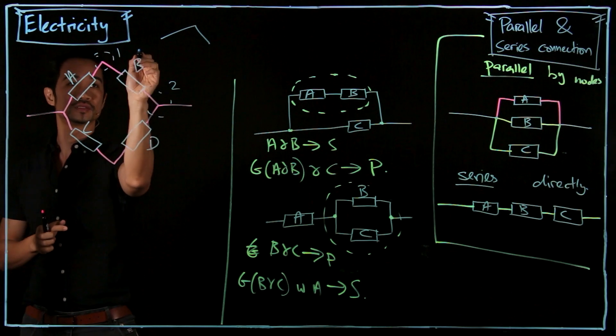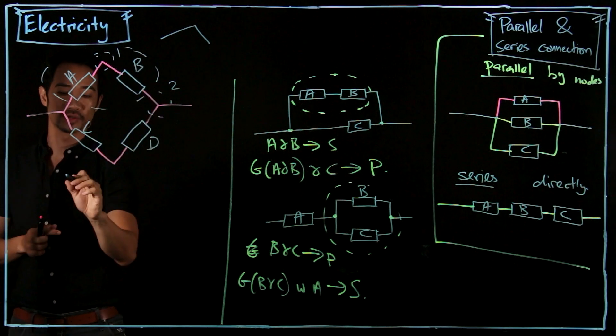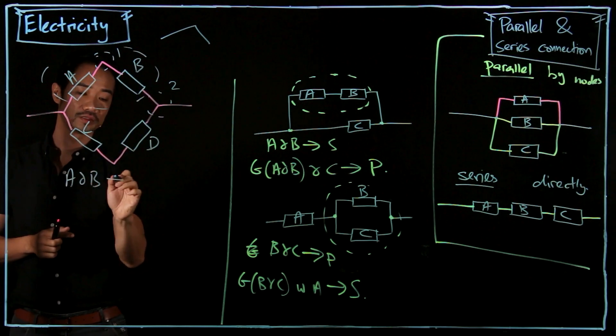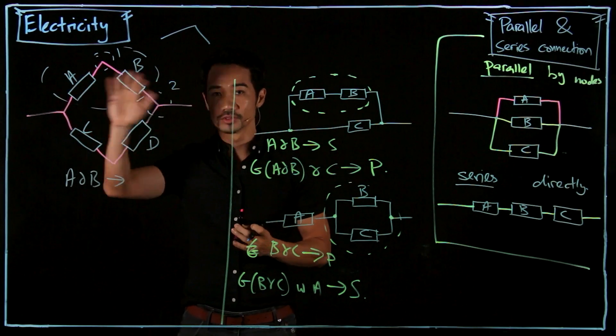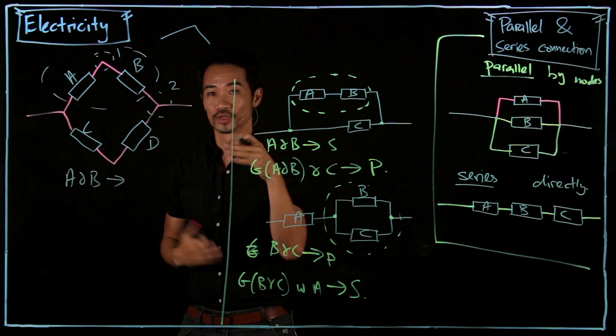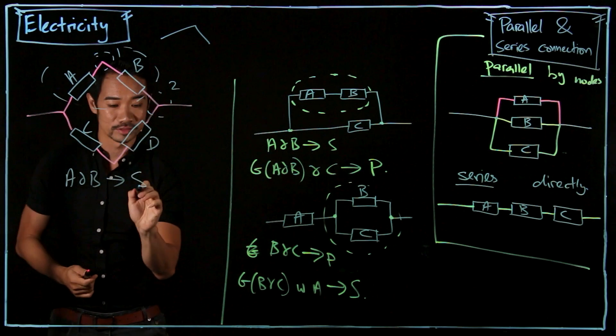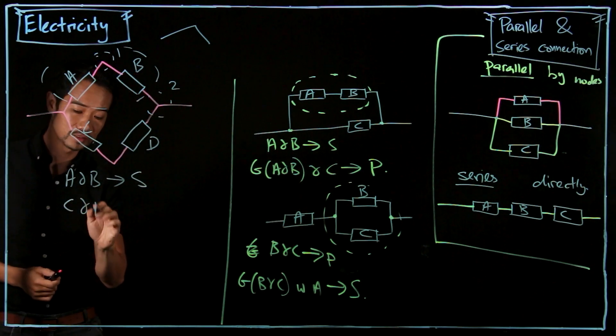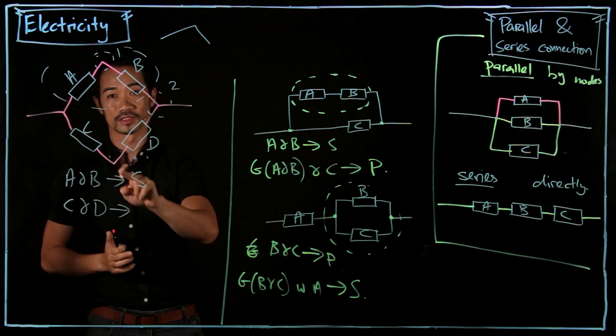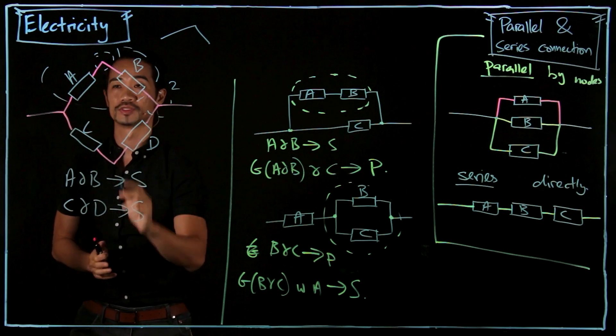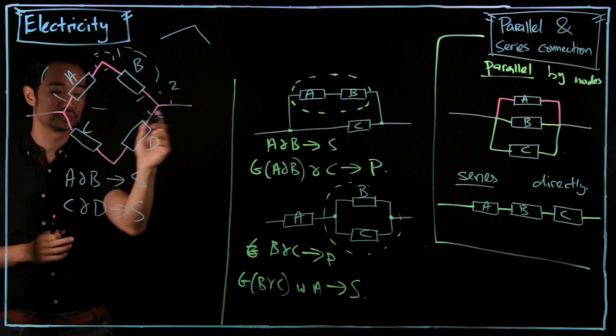So we look at A and B first. These two. So A and B, they are connected in series or parallel. You tell me. Can it go directly to each other? Without any nodes? Yes. So it is series. How about C and D? See? There are no nodes here. It's just a bend. So it's in series. But this whole group and this whole group.